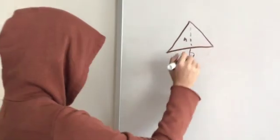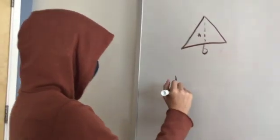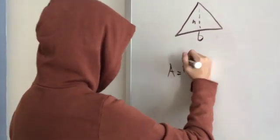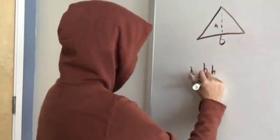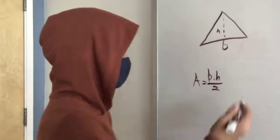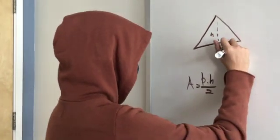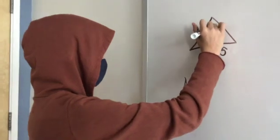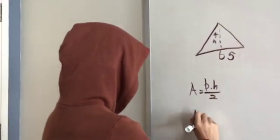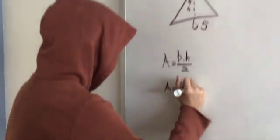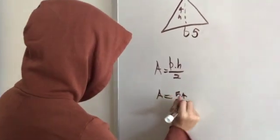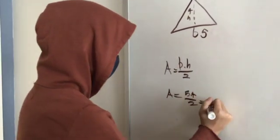How you get the area is: it is the base times the height, divided by 2. So if the base was 5 and the height was 4, you would do 5 times 4, which would equal 20.